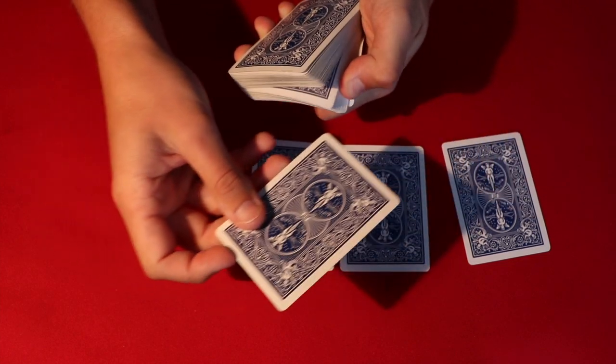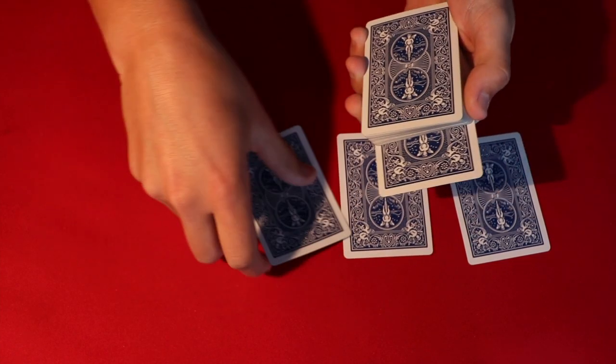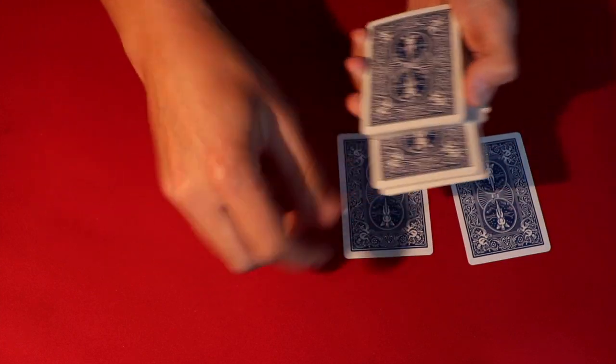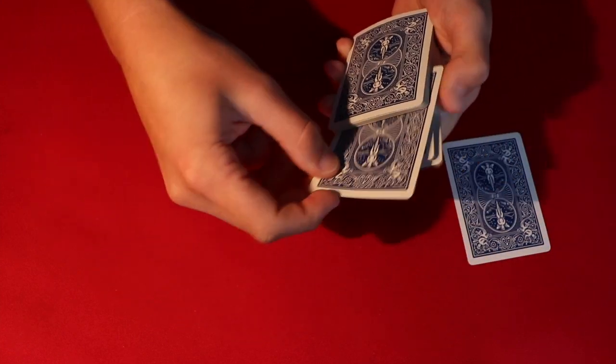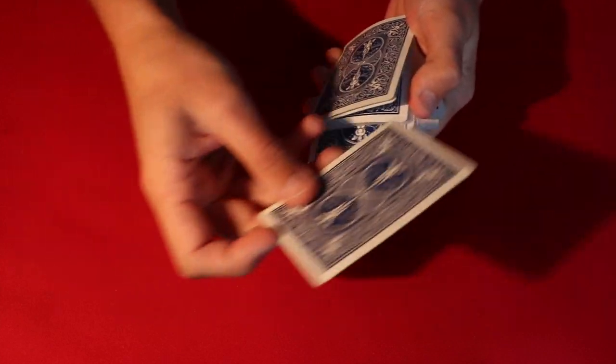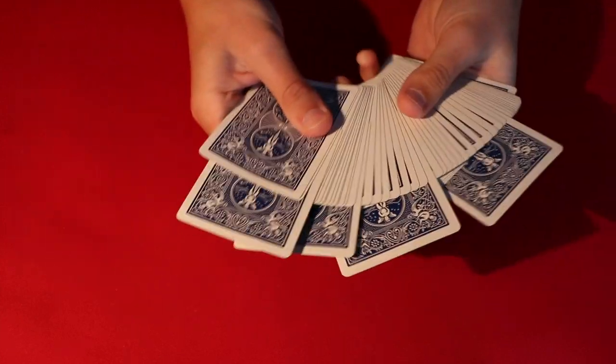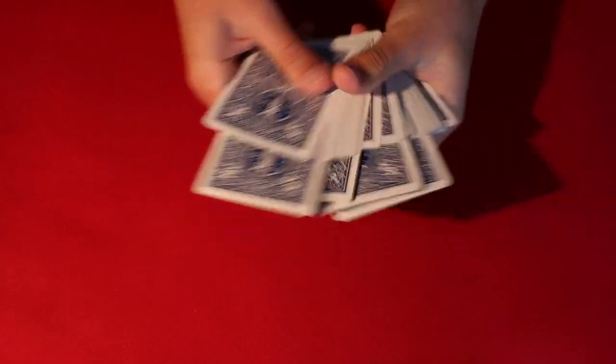We're going to take this and we're going to put this somewhere down towards the lower end of the deck. Do the same thing with the next ace, the same thing with the next one, and then finally with the last ace. As you can see all of them are in different places throughout the deck.